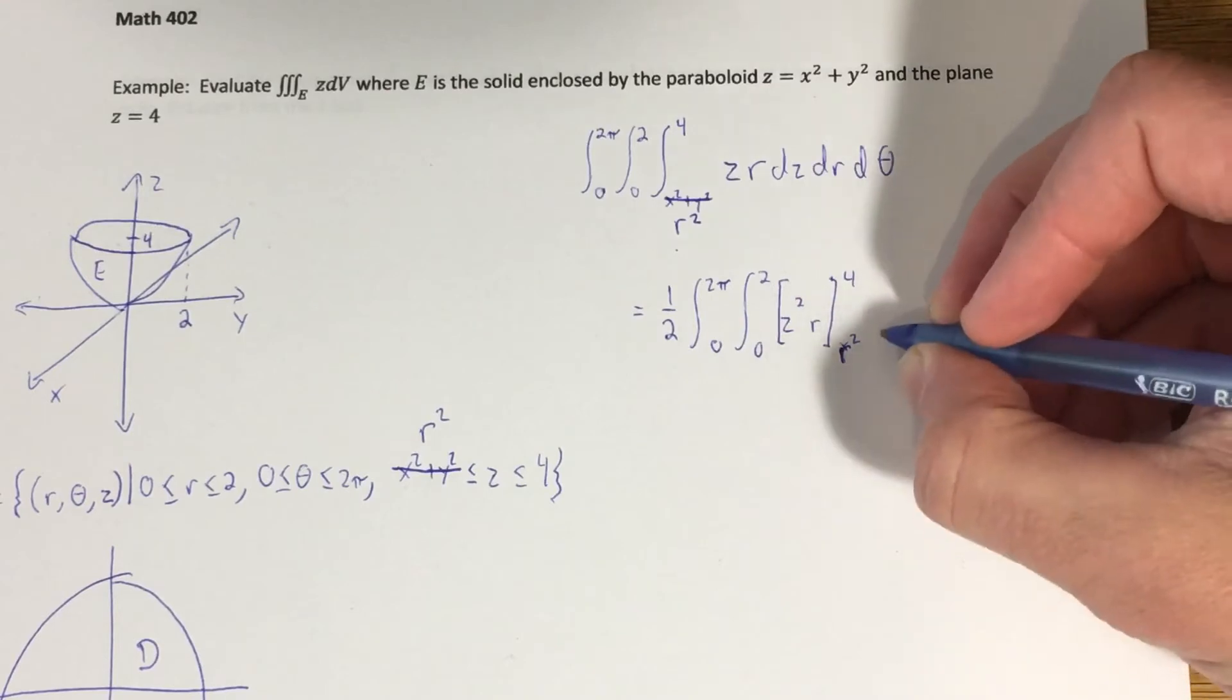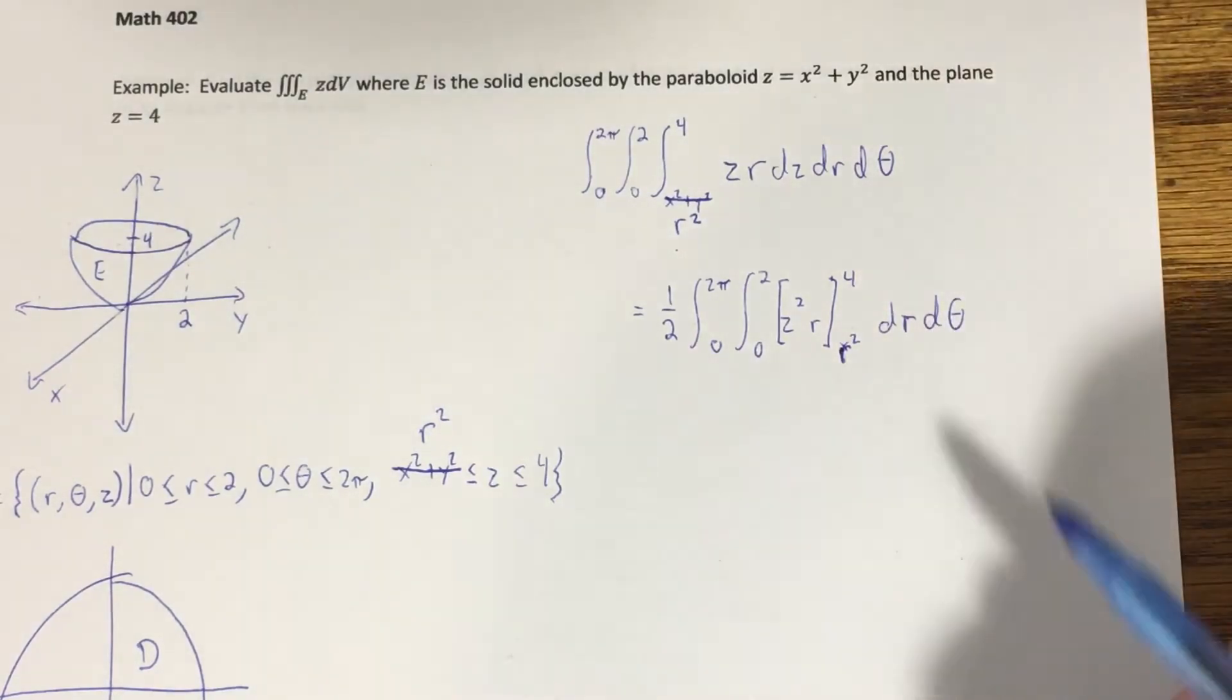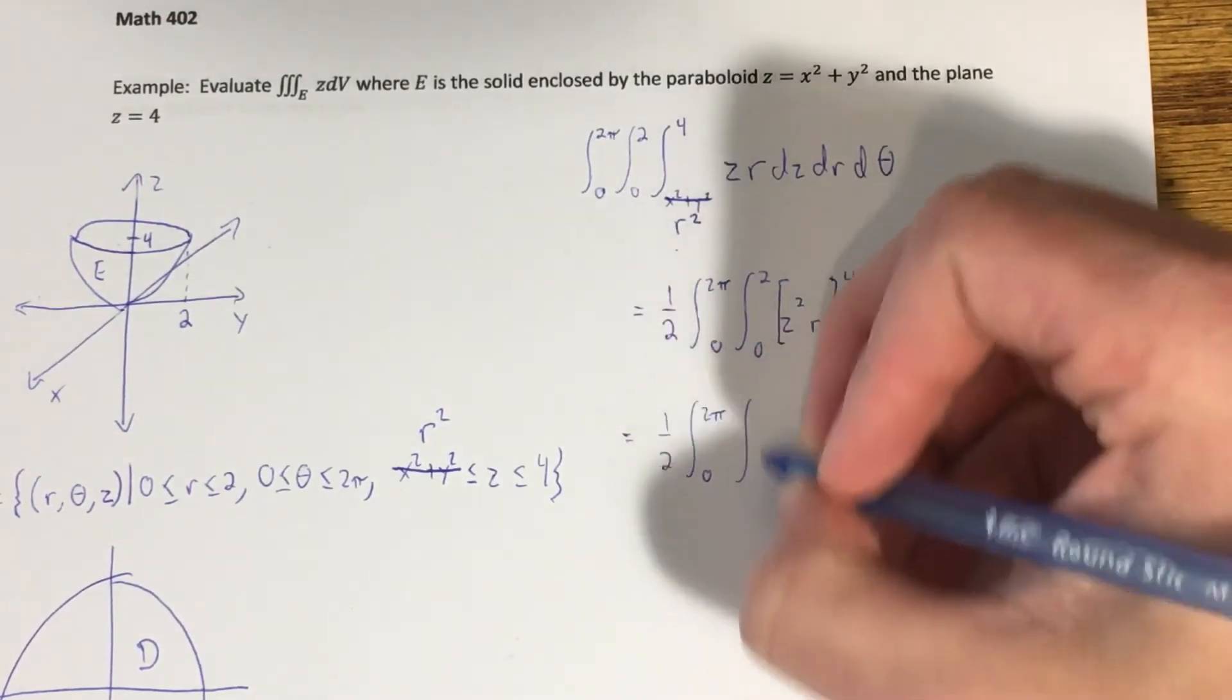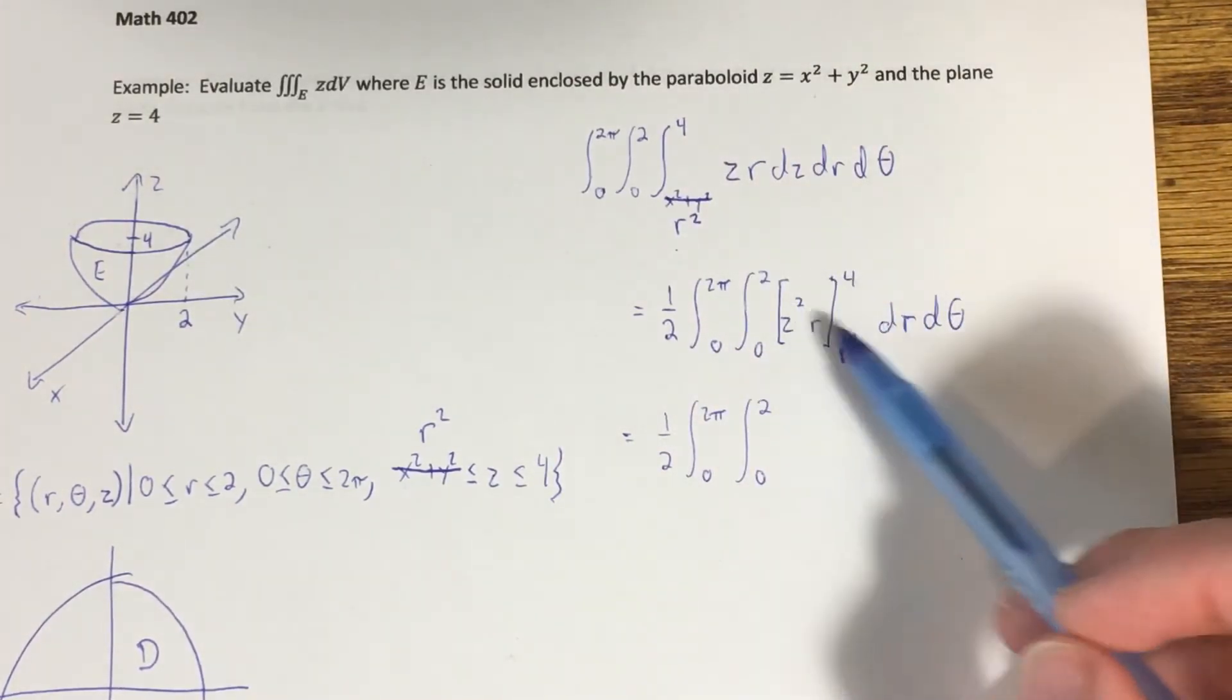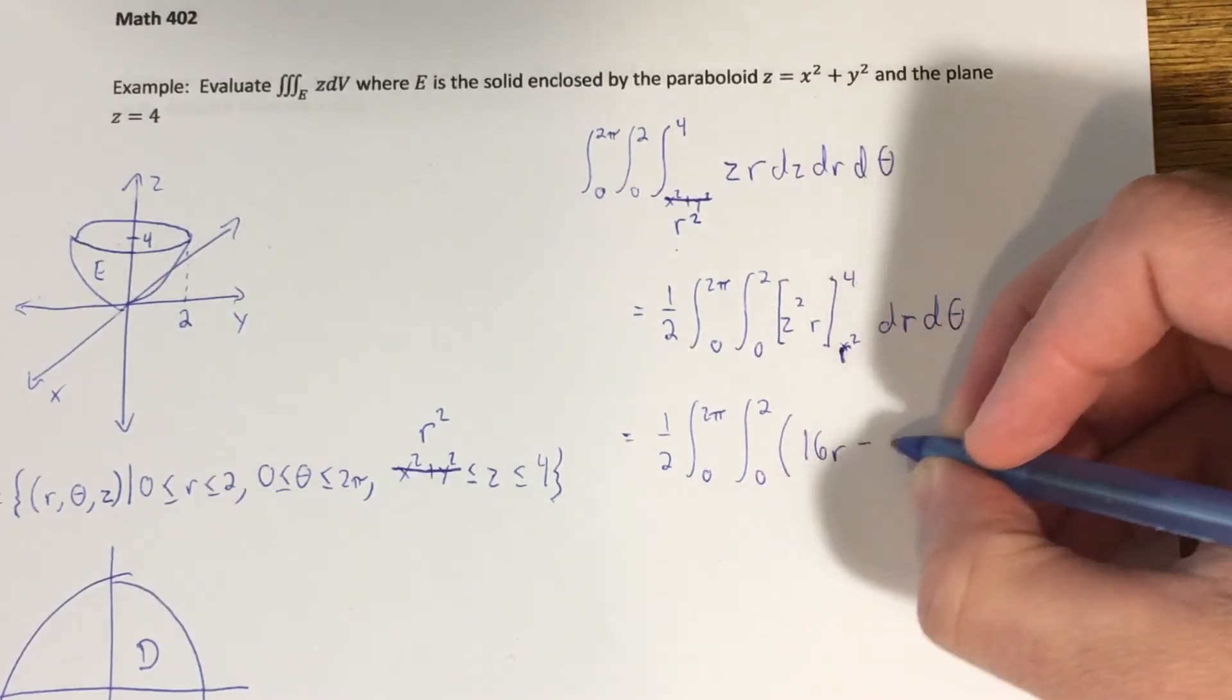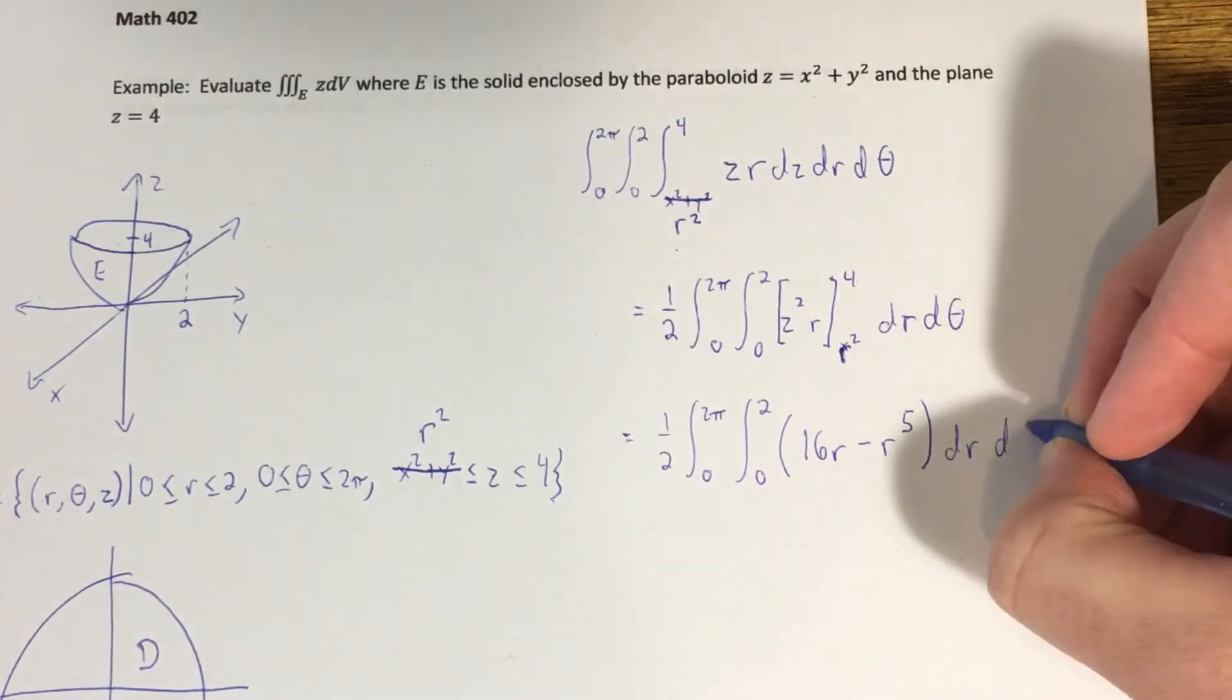So that means this down here is an r squared. This up here is 4. And we have dr dθ here. These are z values. So I'm going to plug those in. 1 half, integral from 0 to 2π, integral from 0 to 2. 4 squared is 16 minus r squared squared, that's r to the 4th. Multiply everything by r. That should look like 16r minus r to the 5th dr dθ.